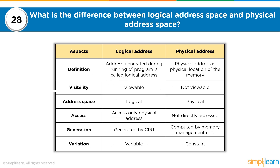The physical address space is the memory module itself — you can access the physical address but cannot see the specific address on the memory module directly. Logical addresses are generated by the CPU during processing, whereas physical addresses are computed by the Memory Management Unit (MMU). Logical addresses are variable, whereas physical addresses are always constant.